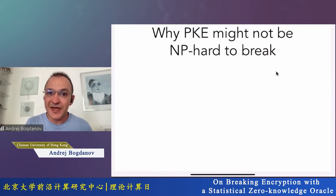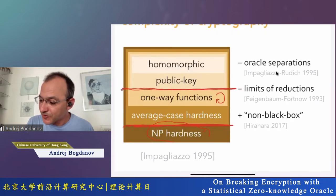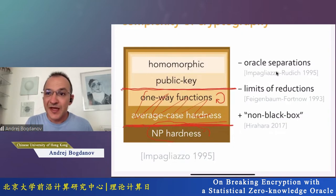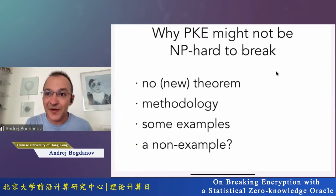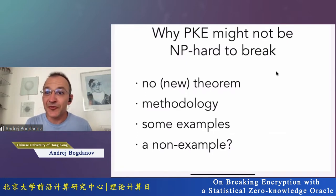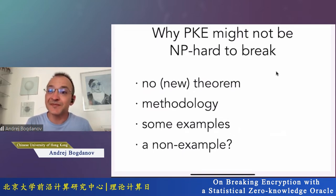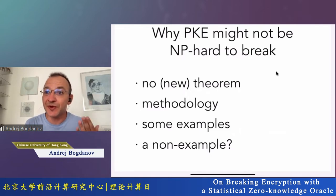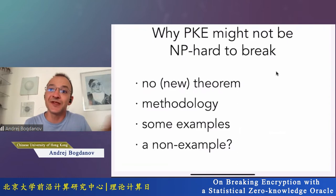What I want to talk about today is to argue a little bit about why public encryption might not be NP-hard to break. I want to focus on this barrier and come clean: I'm not going to prove a new theorem. I'm going to focus more on the methodology — about how you might argue that something is not NP-hard to break. We all know how to argue something is NP-hard, but how do you argue that something is not NP-hard? I want to support this by showing some examples, and maybe at the end I'll tell you a non-example: a public encryption scheme where I don't know how to argue using this methodology.